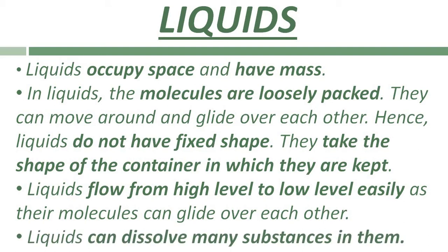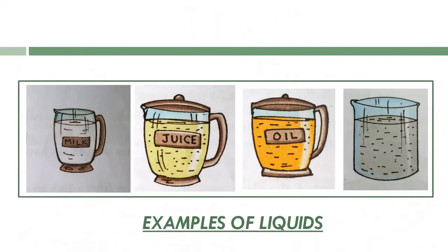Liquids flow easily from a higher level to a lower level as their molecules have space and can glide over each other. Also, liquids can dissolve many substances in them. For example, water is a liquid and can dissolve many substances in it. Examples of liquids include milk, juice, oil, and water.